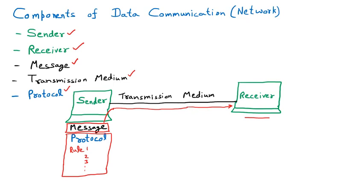Protocol is the agreement between communicating devices so that communication can proceed properly. For example, the agreement between you and me is using Microsoft Teams, our lecture will be one hour, you pay attention, I communicate in English, I upload the assignment and you download it — that is the agreement between us. So these are the five components of data communication: message, sender, transmission medium, receiver, and protocol.